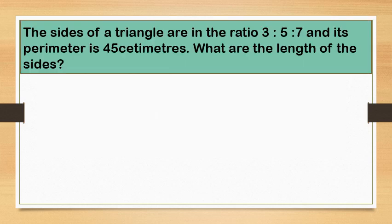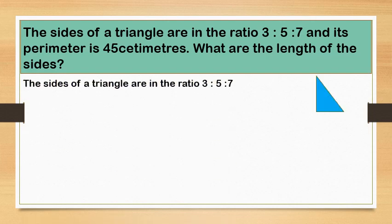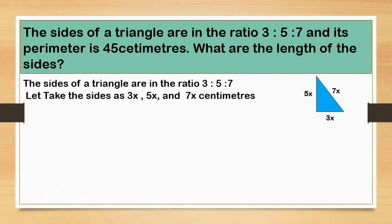Let us see one example. The sides of a triangle are in the ratio 3 is to 5 is to 7 and its perimeter is 45 centimeters. What are the lengths of the sides? The sides of a triangle are in the ratio 3 is to 5 is to 7 and its perimeter is given, that is 45 centimeters. So, let us take the sides as 3X, 5X and 7X centimeters.